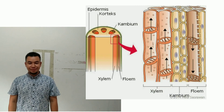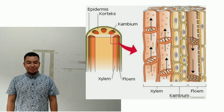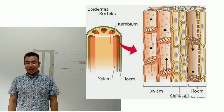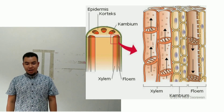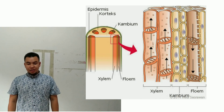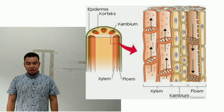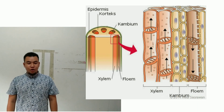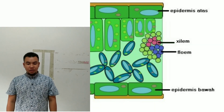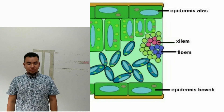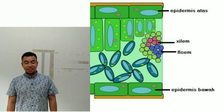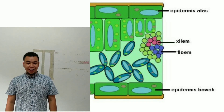Jaringan dewasa adalah jaringan yang terbentuk dari diferensiasi dan spesialisasi jaringan meristem. Jaringan dewasa dibagi menjadi empat jaringan, yaitu jaringan epidermis. Jaringan epidermis adalah jaringan yang tersusun rapat tanpa rongga antar sel dan umumnya terdiri dari satu lapis sel.